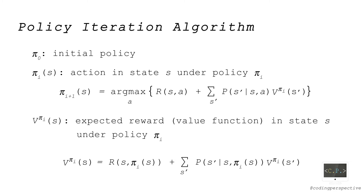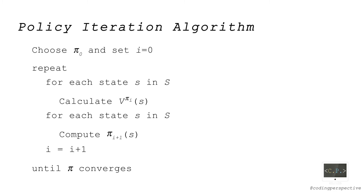In the last step, we improve our current policy by using v^{pi_i}. Basically, pi_{i+1}(S) is equal to the argmax of the expression shown, where the first part is the intermediate reward and the second part is the expected future reward. Until pi_i equals pi_{i+1}, we iterate steps 2 and 3. So we can summarize the policy iteration algorithm as shown.